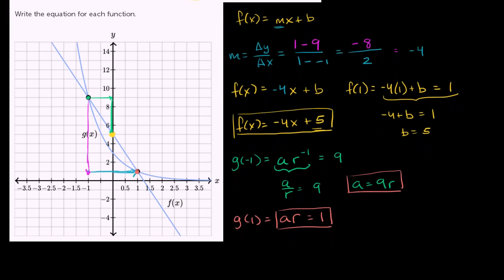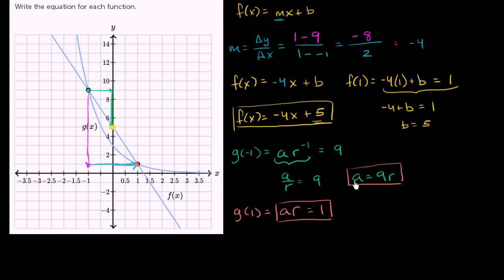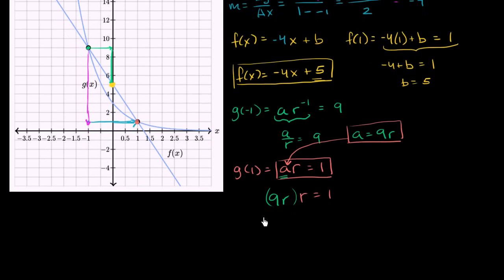Well, I have a little system here. It is a nonlinear system, but it's a pretty simple one. We could just take this a and substitute it in right over here. The first constraint tells us that a must equal 9r. So instead of writing an a here, I'll write 9r times r = 1. Or we could write 9r² = 1. Divide both sides by 9, r² = 1/9.